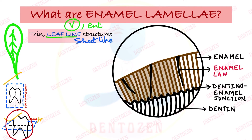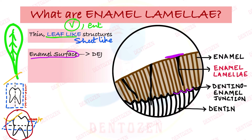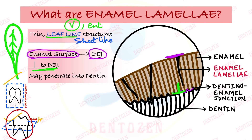Enamel lamellae start from the enamel surface and go towards the dentino-enamel junction, oriented at 90 degrees — that is, they are perpendicular to the dentino-enamel junction. Some may penetrate into the dentine, while others remain within the enamel, so they can extend to varying depths.